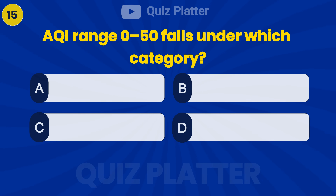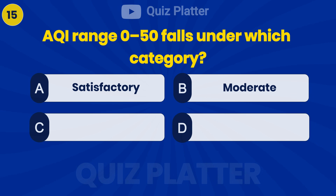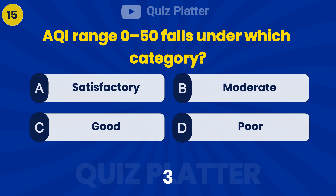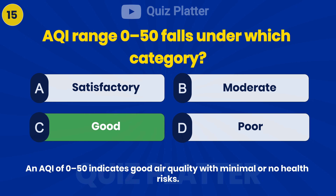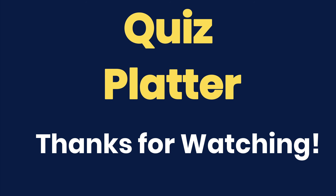AQI range 0 to 50 falls under which category? Answer: C — Good.